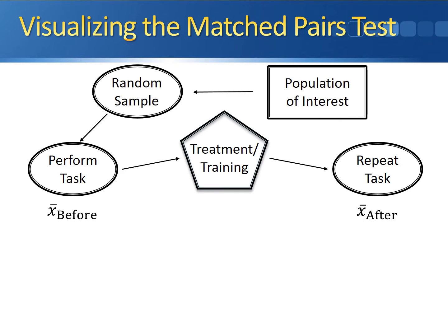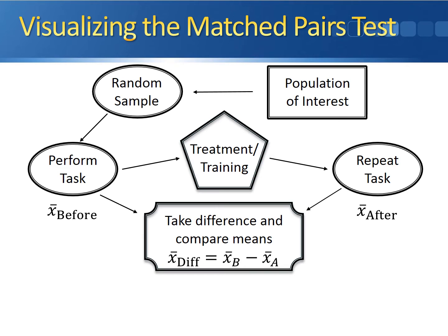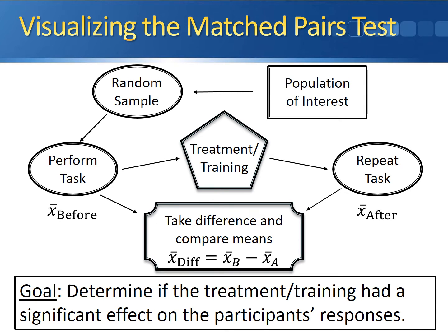Now that we have all of the information, we take the difference between the sample means by subtracting the after mean from the before mean to get the sample mean of the differences. Our ultimate goal here is to determine if the treatment or training had a significant effect on the participants' responses.